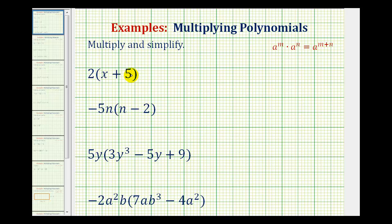For 2(x + 5), we'll distribute the 2, so we'll have 2 times x plus 2 times 5. Two times x is 2x plus 2 times 5 is 10. Often we'll skip this step and perform the multiplication in our head.